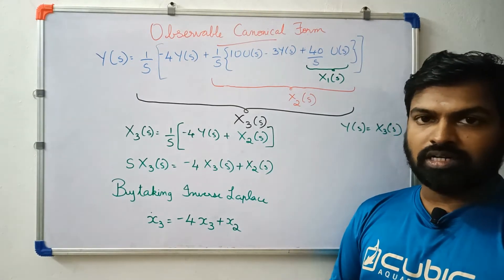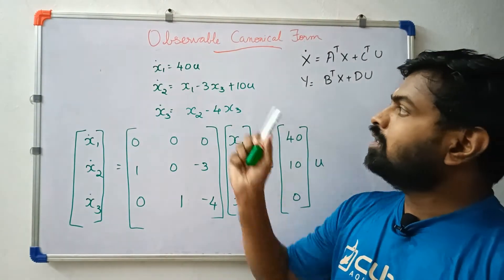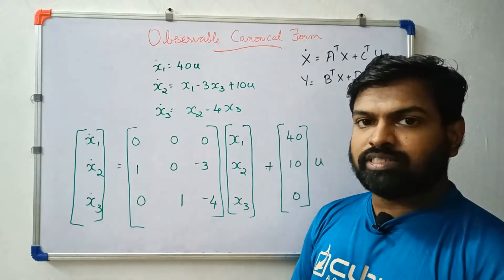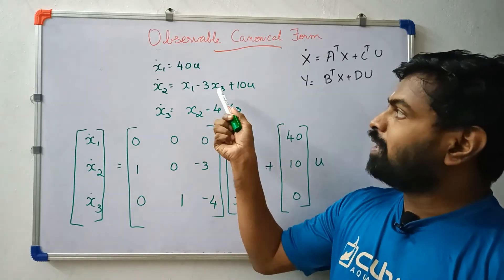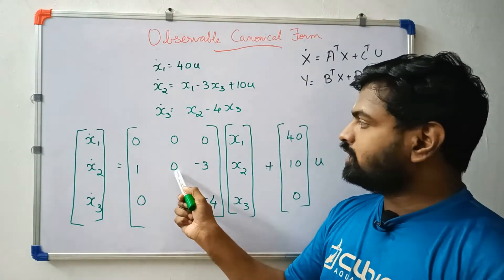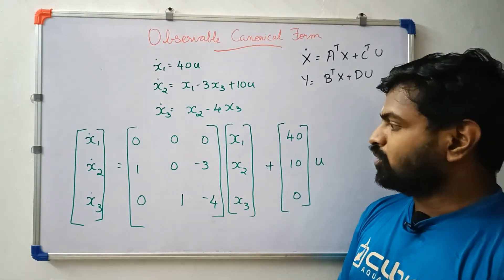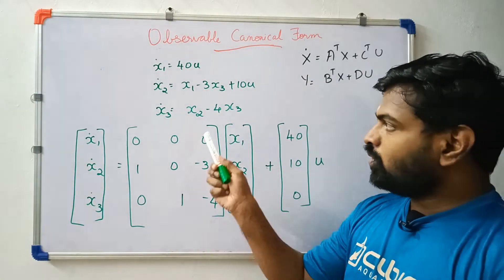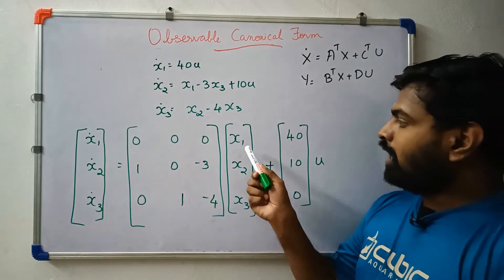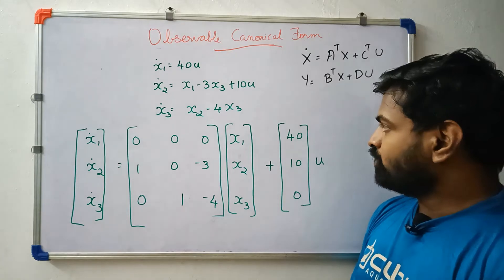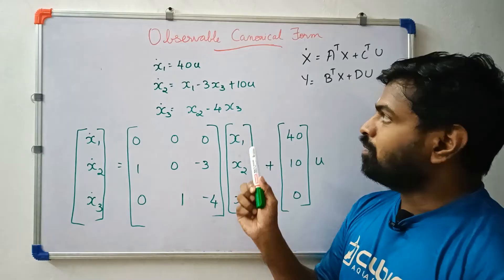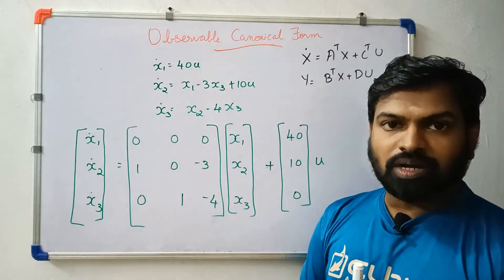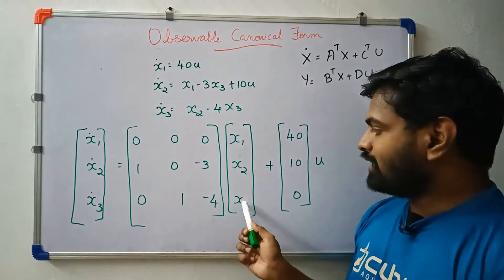Now we have three state equations: x1 dot equals 40u; x2 dot equals x1 minus 3x3 plus 10u; x3 dot equals x2 minus 4x3. The state variables x1, x2, x3 are collected. Written in matrix form: x dot equals Ax plus Bu.